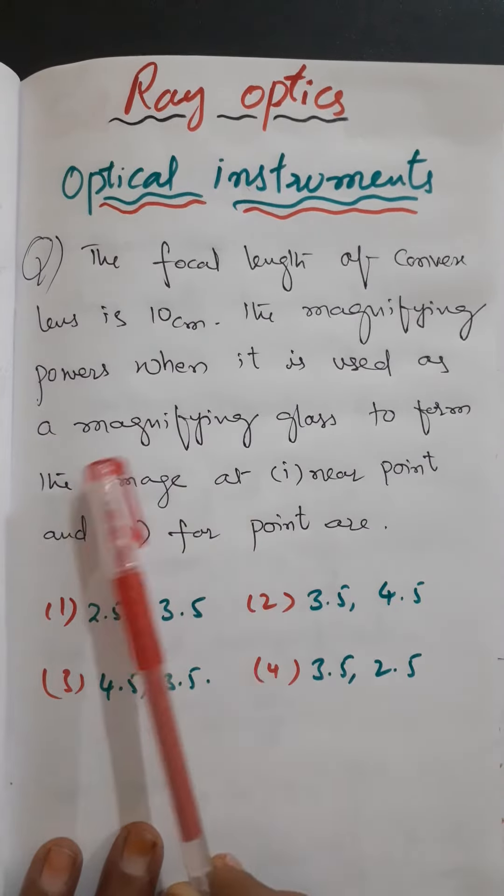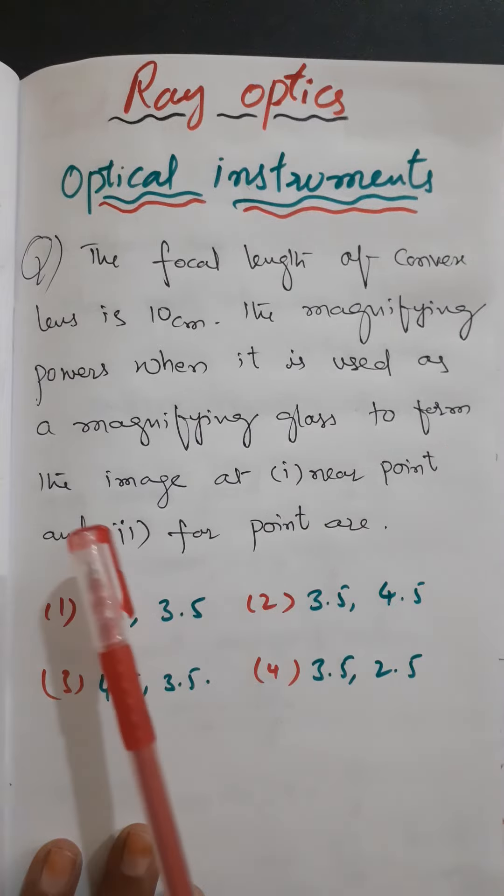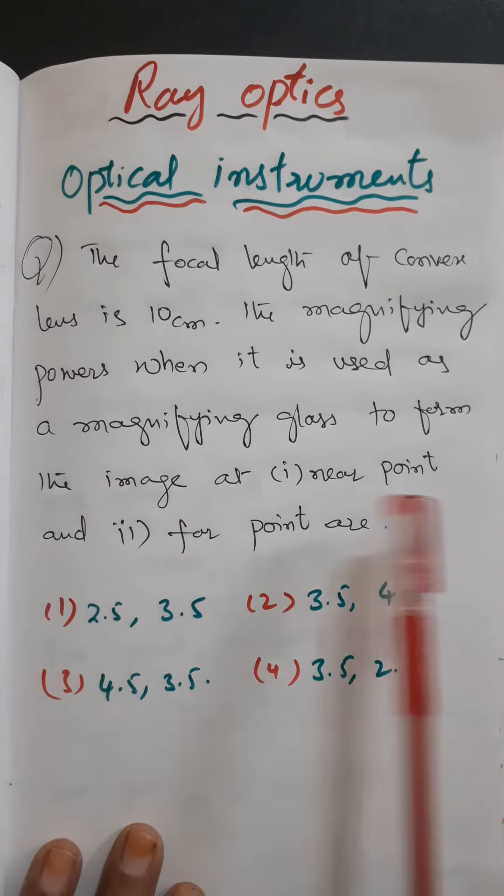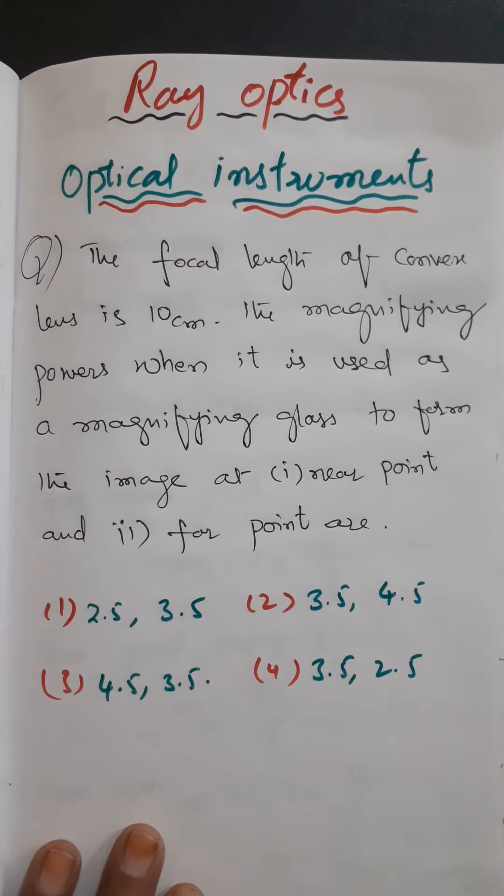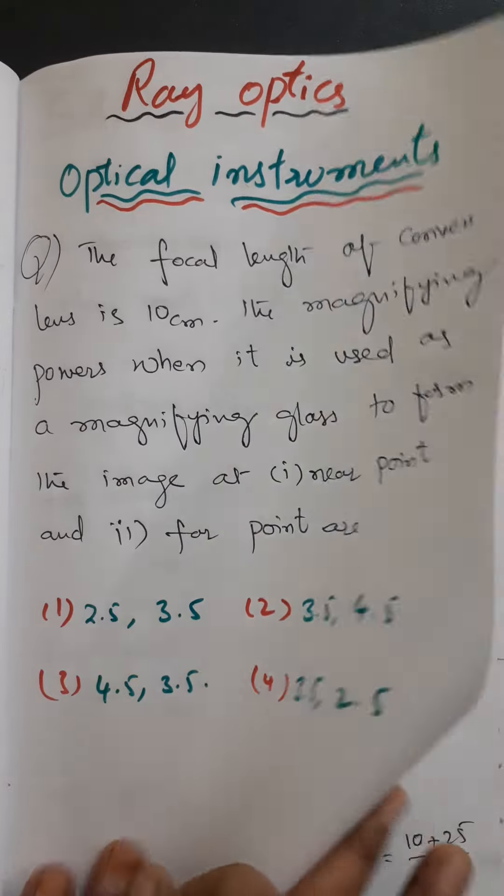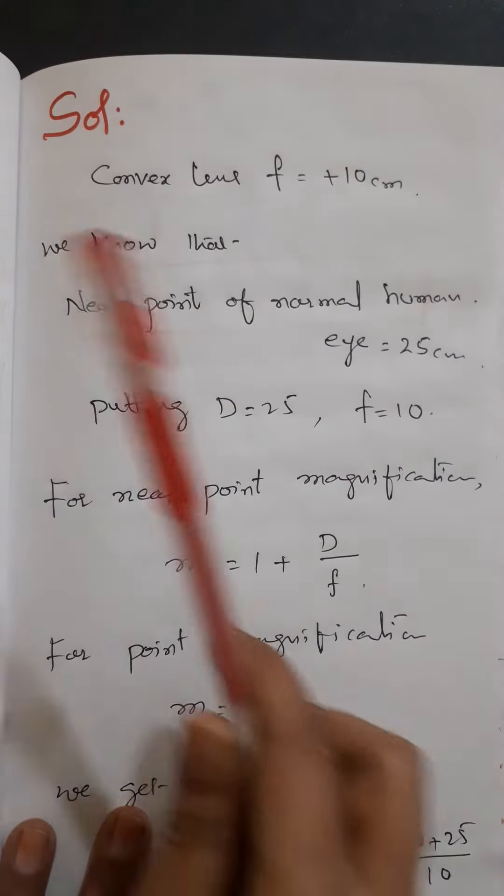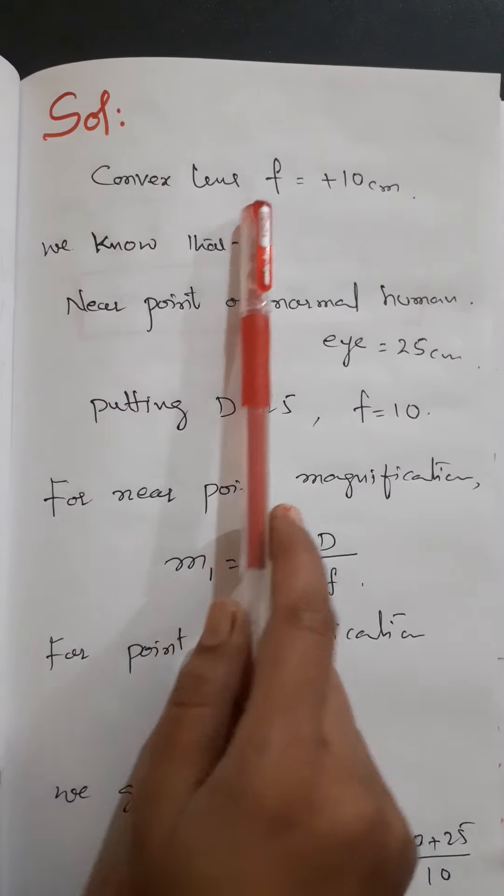There are four options here. The correct option is... The given is: focal length of the convex lens is plus 10 centimeters.